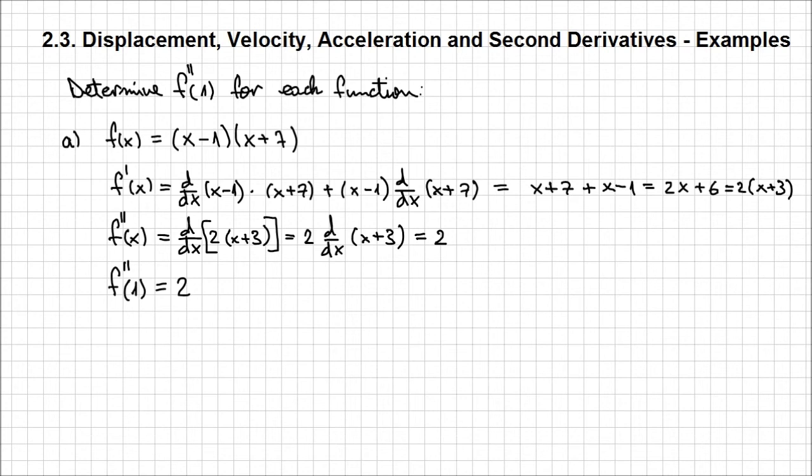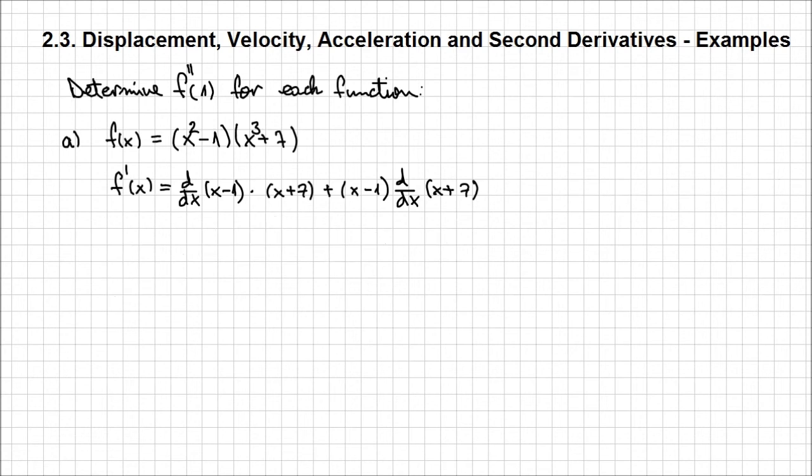But let's consider another function, and I'm only going to modify this function that we had earlier by increasing the degree of the polynomials in either one of those expressions. So I'm going to have x square minus 1 times x at power 3 plus 7. We're going to approach the problem just like before. So it's a product, I'm going to have to determine the first derivative as d/dx of x square minus 1 times x at power 3 plus 7.